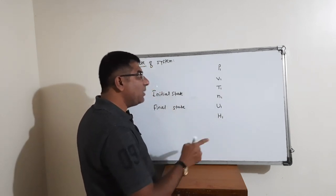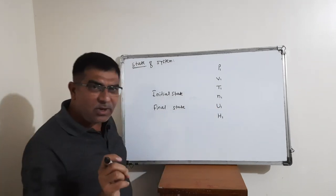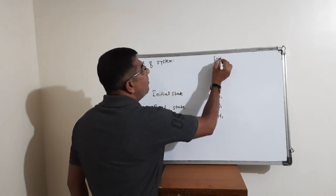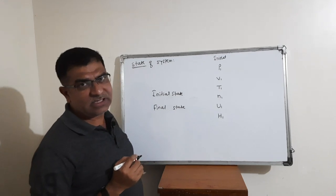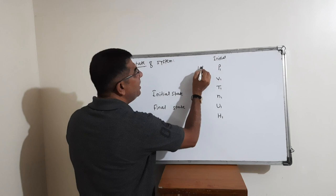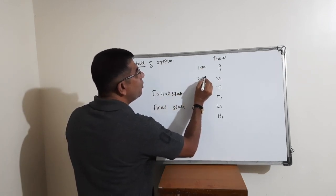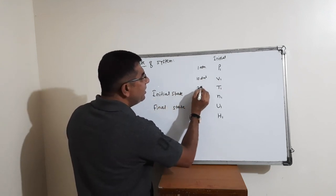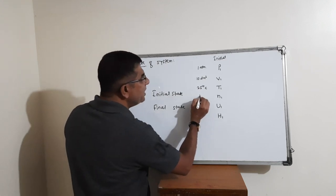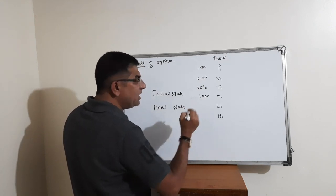These thermodynamic properties of a system have specific values, and that condition is called the initial state of a system. For example, the initial state may have: pressure = 1 atmosphere, volume = 10 dm³, temperature = 298 Kelvin, number of moles = 1 mole.